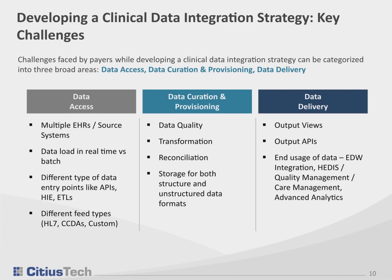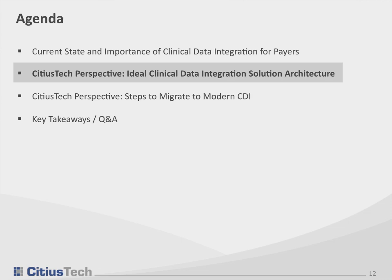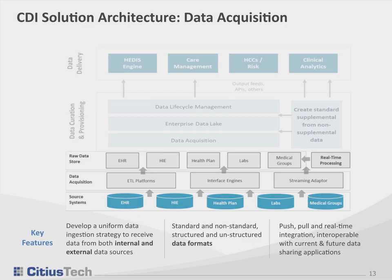As we move on to our next polling question: how many clinical formats of data do you collect? I'll launch that poll question. Everybody should see it on their screen as we move on to the next area of the architecture. Swarn reviewed the high-level architecture — now we'll go into some of the details of what this means as we look more towards executing that architecture. Swarn, over to you again.